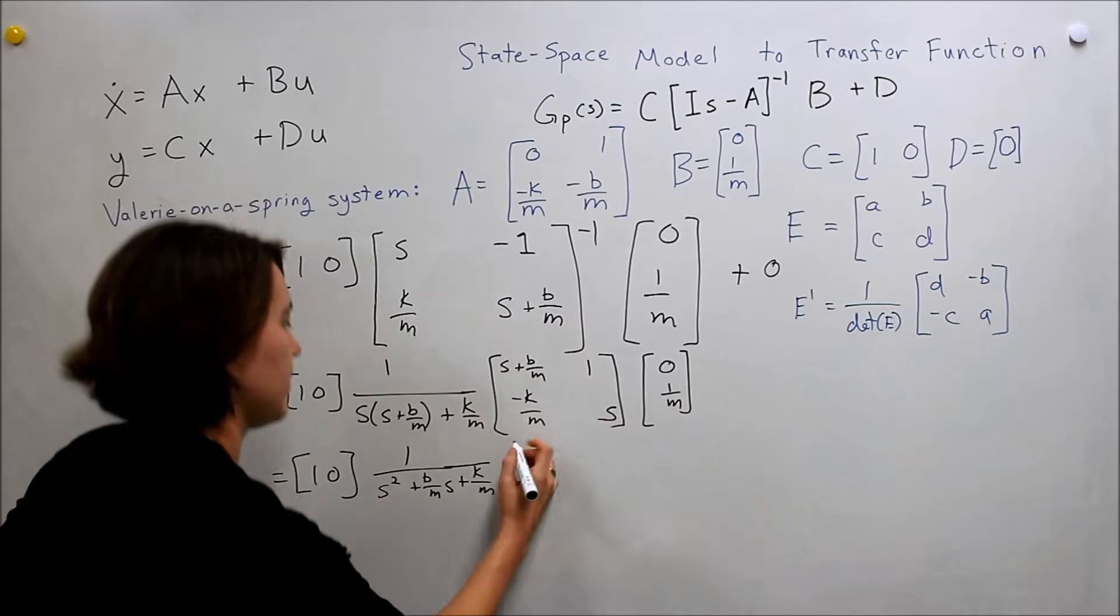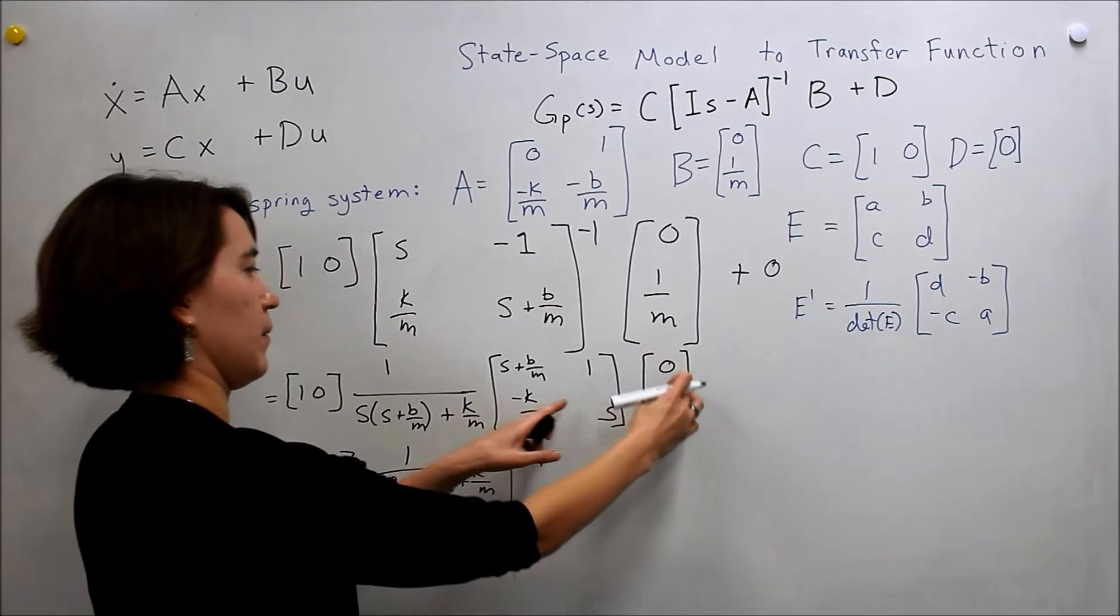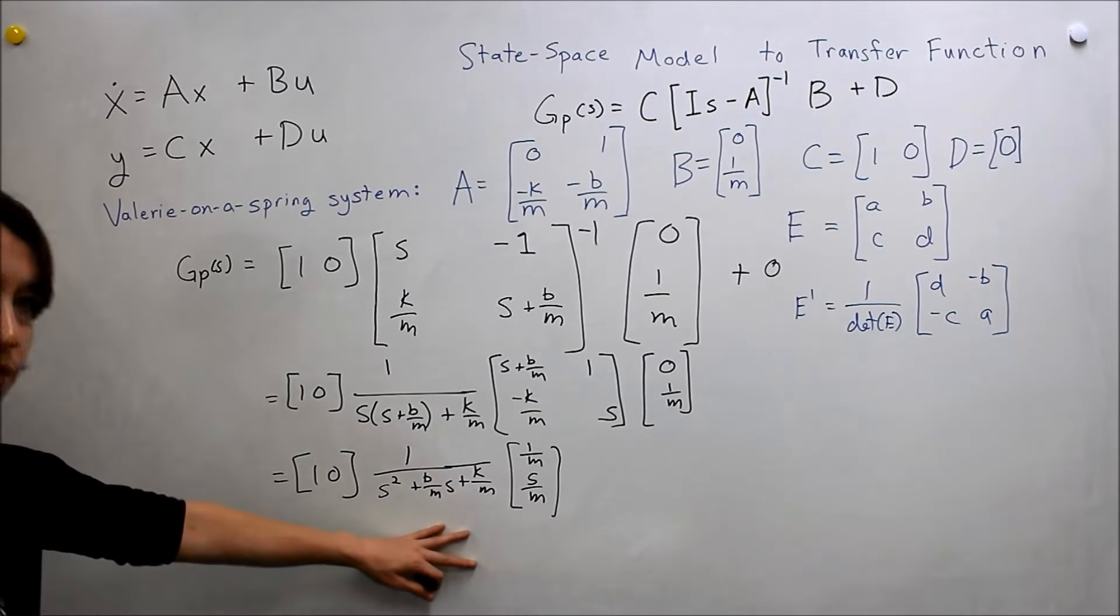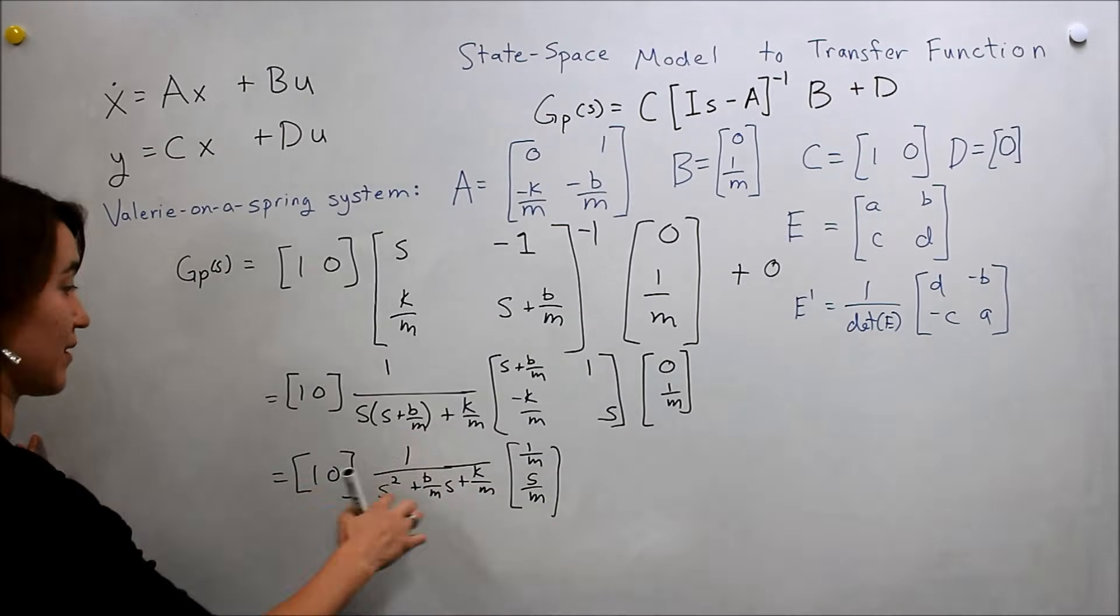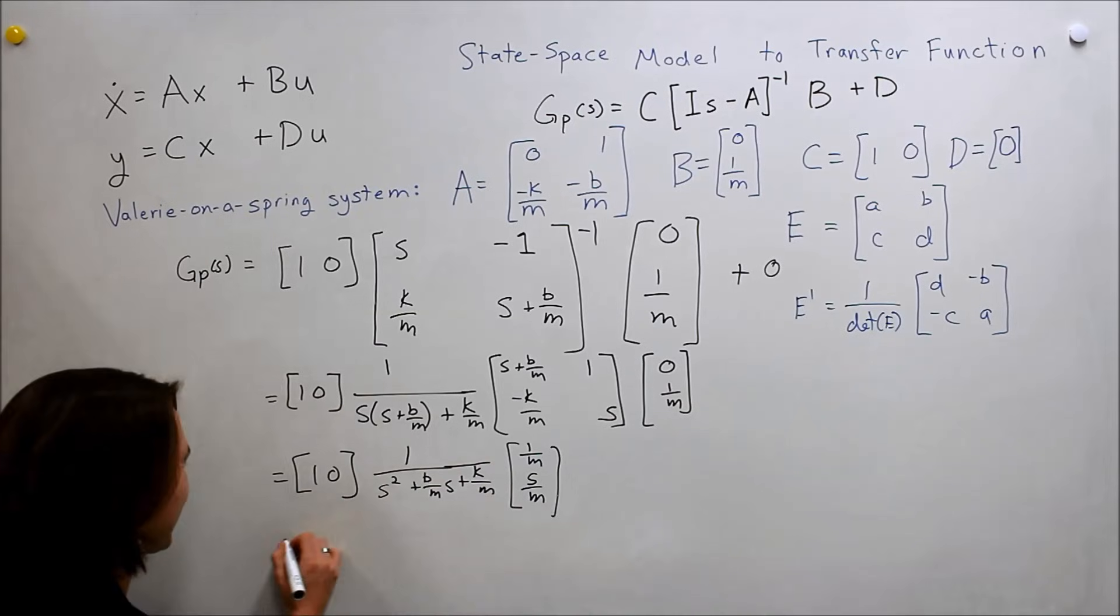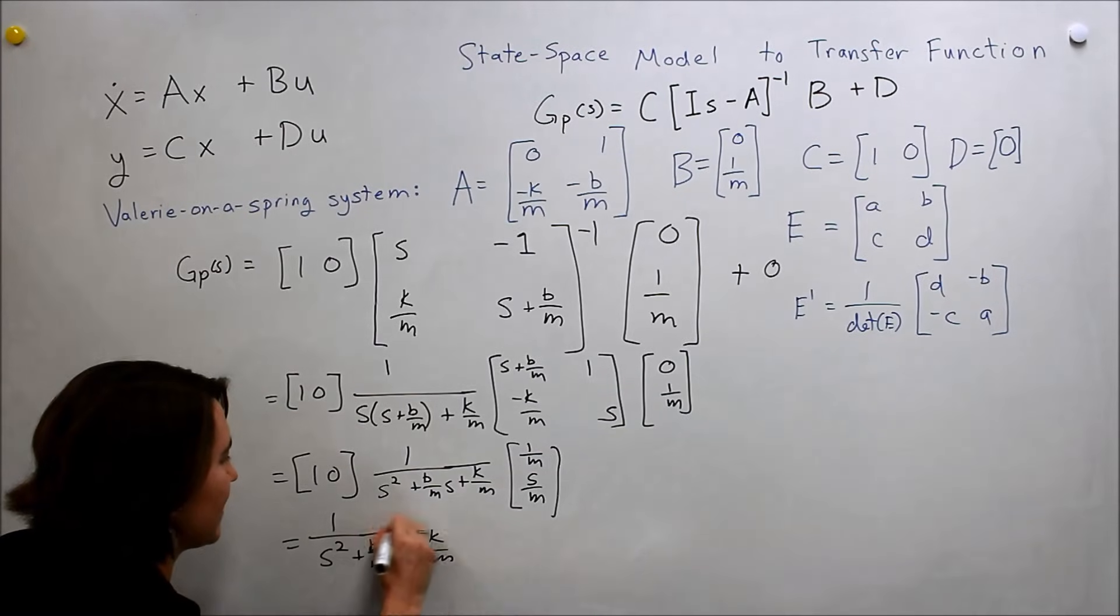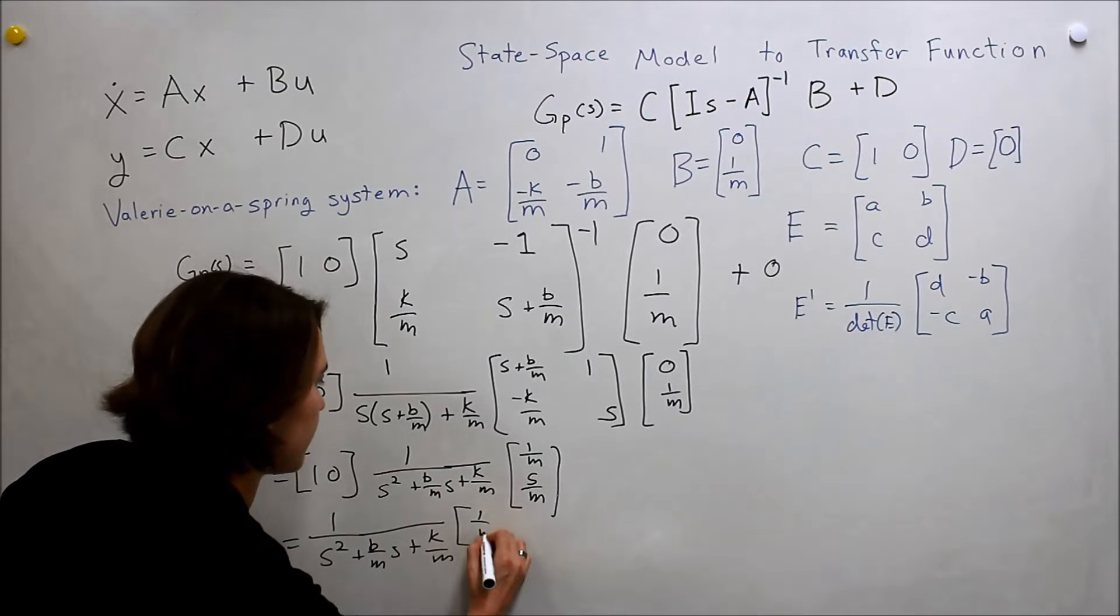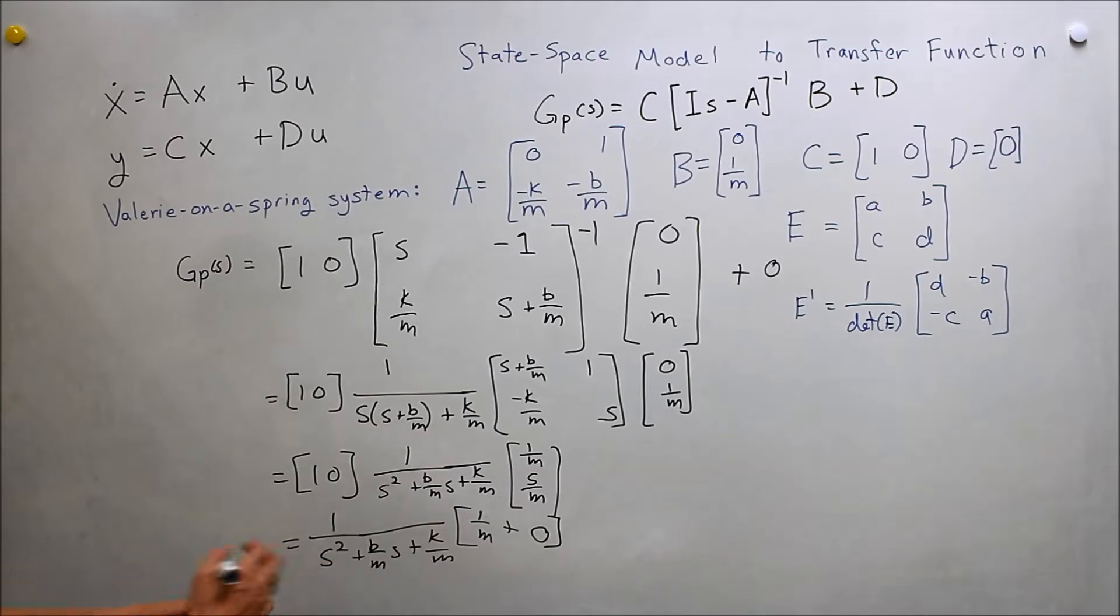Okay. And so if we multiply this out, we'll get zero plus one over m in the first spot, one over m. And then zero plus s over m. Okay. Okay. So we're getting closer. And this again is our scalar, so we can actually move it out to the front. And we can do the multiplication of these two matrices. So one plus m times zero plus, we'll write it out. One over s squared plus b over m, s plus k over m. This is our scalar out in front. So now let's multiply these two matrices and we'll get one over m plus zero.